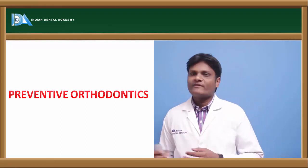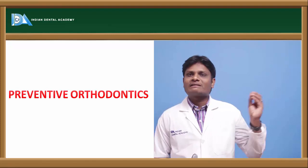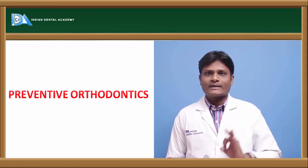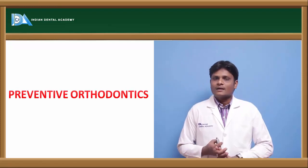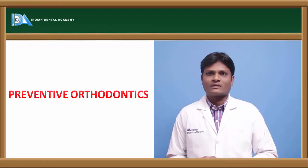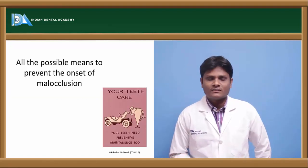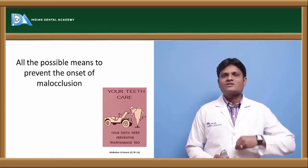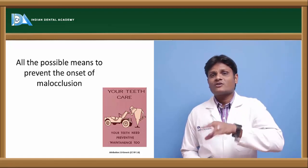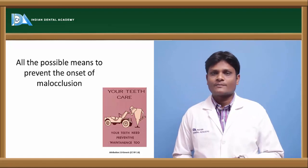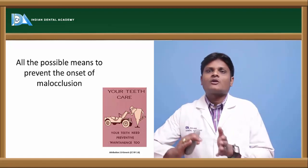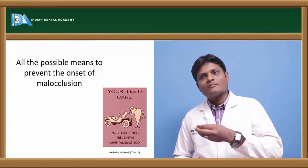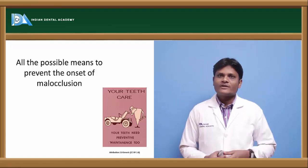Today we are going to discuss preventive orthodontics. As mentioned in the introduction class, orthodontics can be divided into preventive, interceptive, and corrective. Preventive orthodontics refers to all the processes, techniques, and procedures we carry out to prevent the onset of malocclusion. That means malocclusion has not yet occurred, and we are taking every necessary step to prevent it from occurring in an individual.